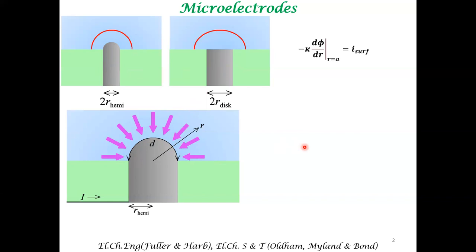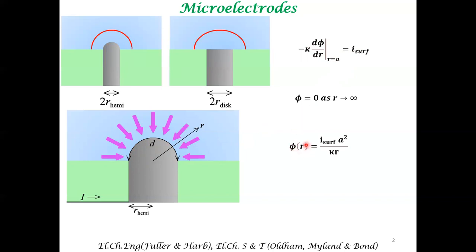Let's get the idea on potential drop involved in a microelectrode. The relevant Laplacian equation is the following. At R equal to A — where A is the radius of the hemispherical region — we apply the boundary condition equating it to current. The other boundary condition is that as R goes to infinity, the potential is zero. With this, we can get the solution for potential, which is dependent on the radius of the hemispherical region. Kappa is the usual symbol for conductivity.